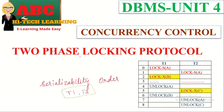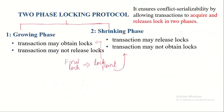In this video we are going to discuss the two-phase locking protocol. It ensures conflict serializability by allowing transactions to acquire and release locks in two phases.